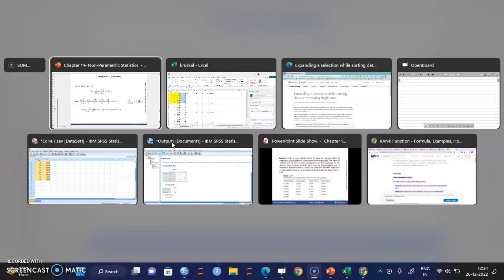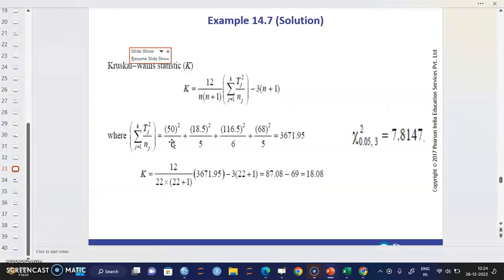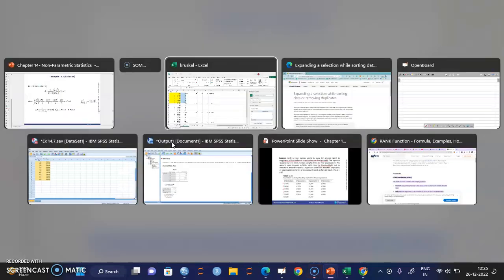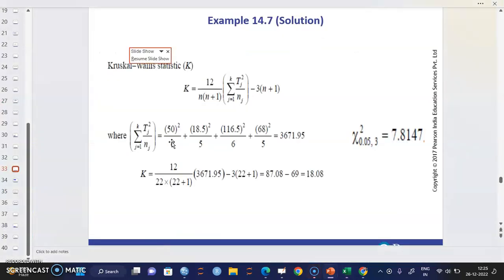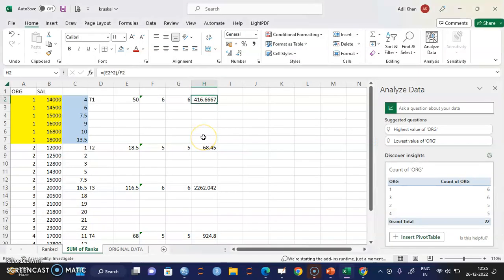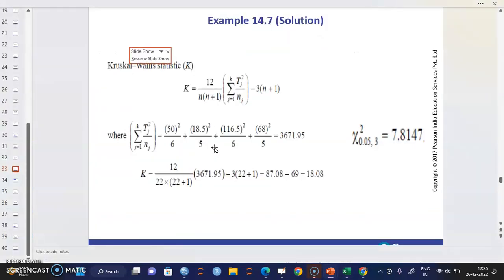So this is 50. Then again, 18.5 square divided by five. So here, it is 18.5. We square it, we will get this thing and divide by the total number of observations. Similarly, we do this thing for all other groups. And then we add them, these values together. The value will be 3671.95.